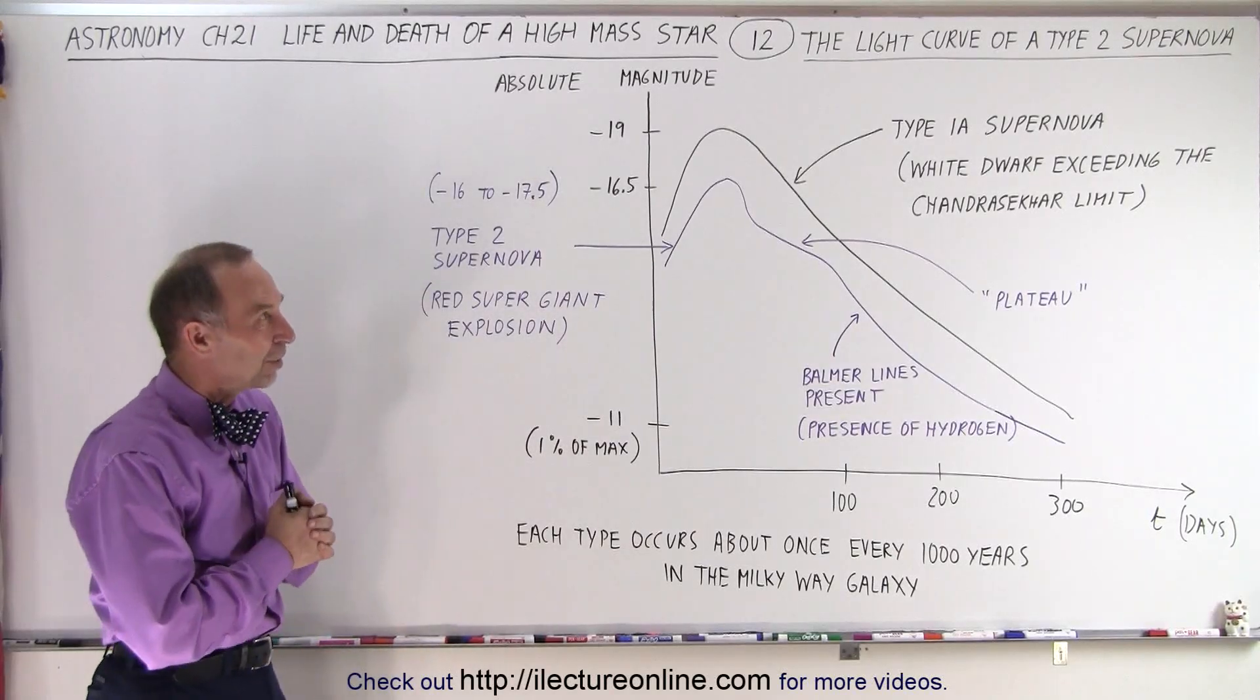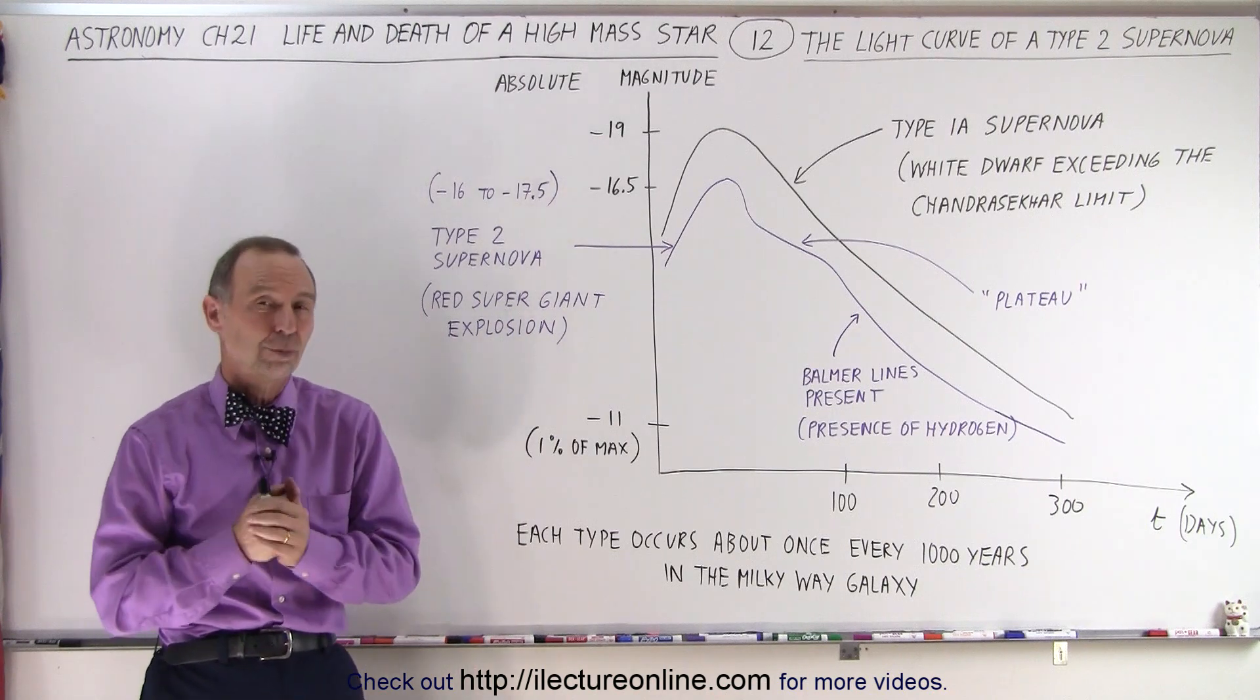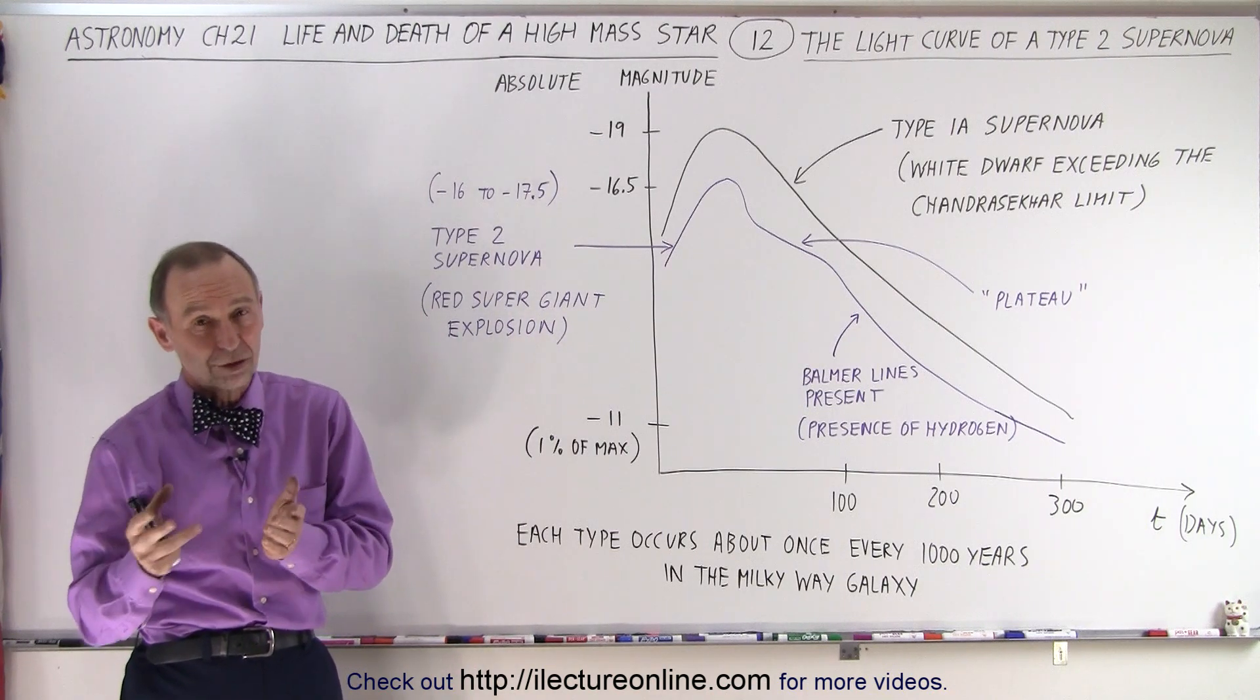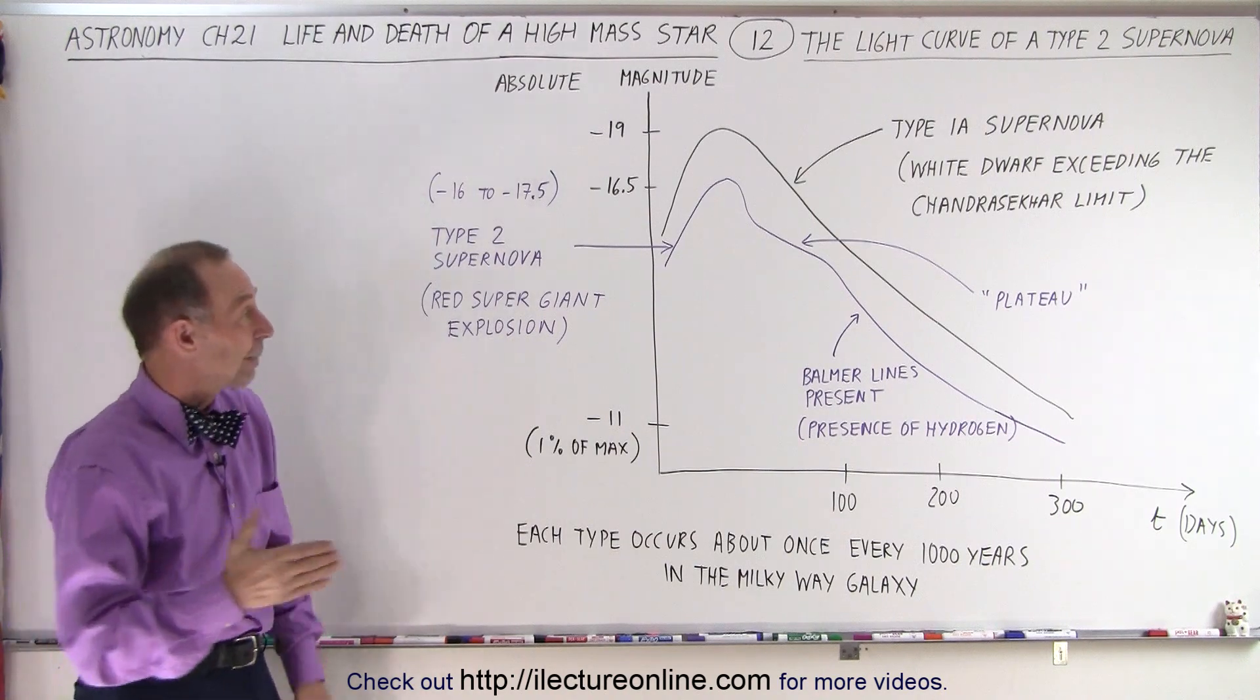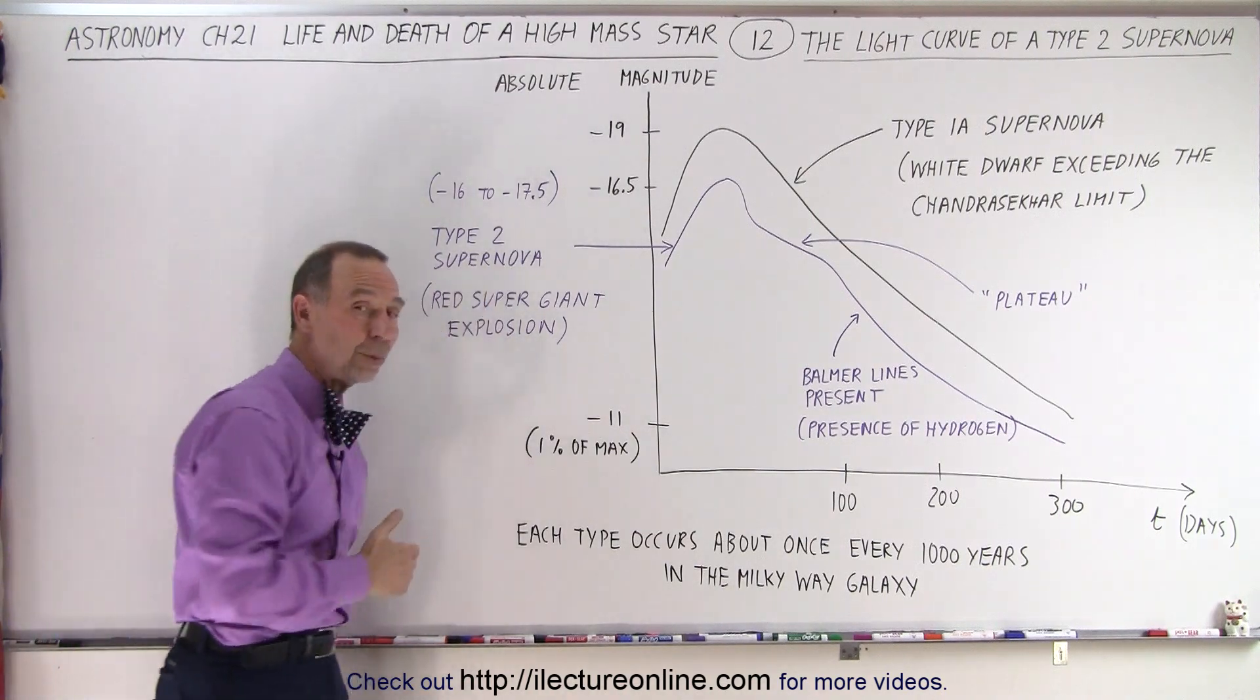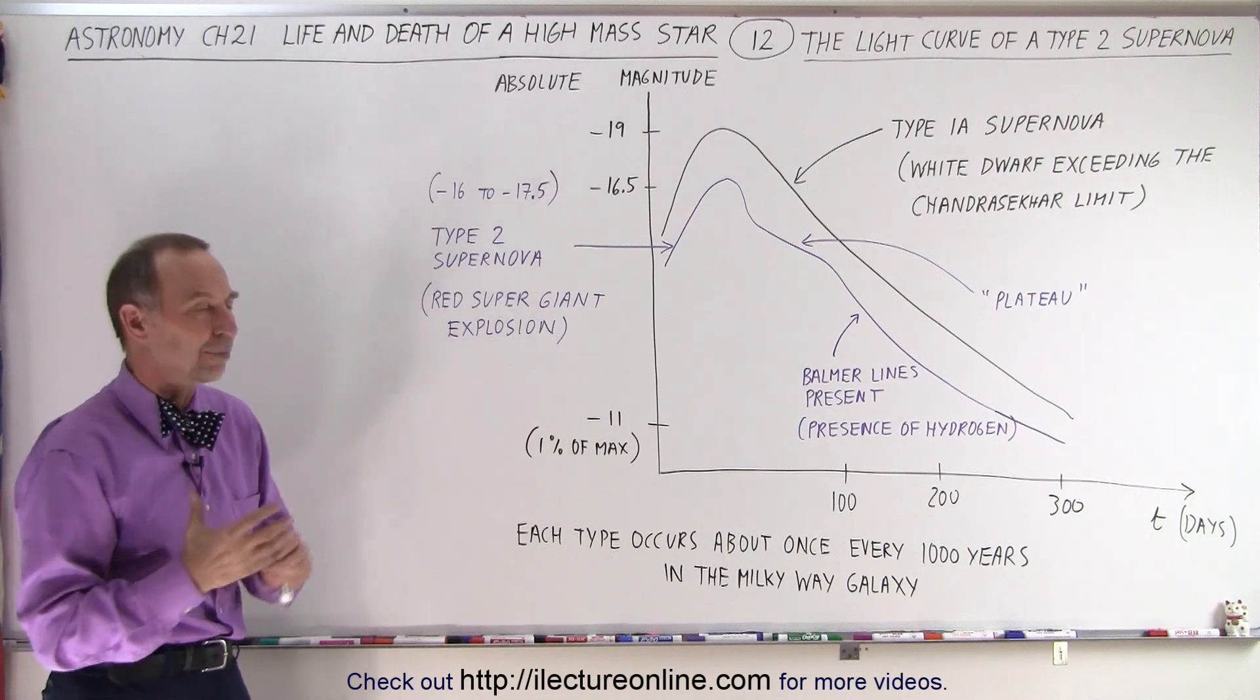Welcome to our lecture online. So what do we see when we have our telescope trained at one of those supernova explosions? It turns out there's two different kinds. We have the Type 1a and the Type 2. The Type 2 is the one that we've been dealing with when the super red giant comes to its end time.